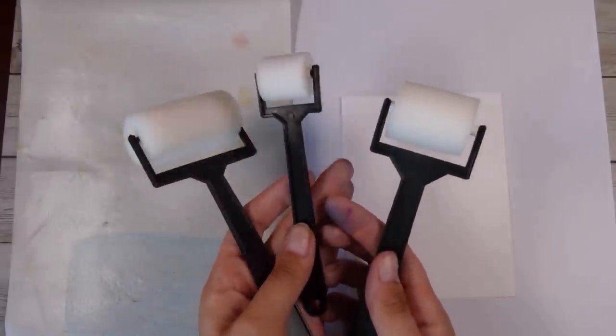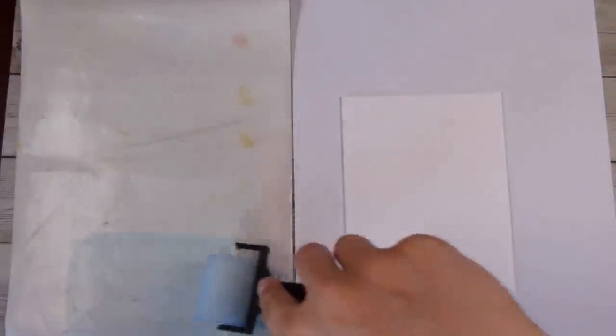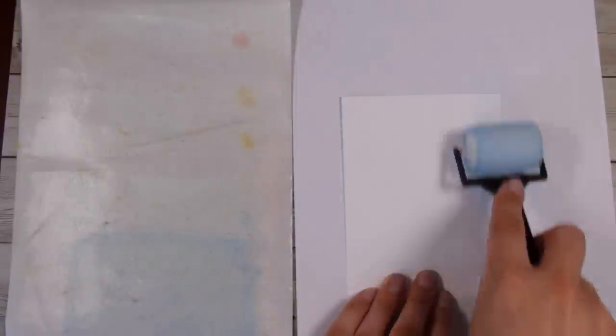So I purchased these three foam rollers here. These come in a three-pack. I've just popped some of my distress oxide ink down on a non-stick mat and all I'm going to do is roll it in the ink a bit.